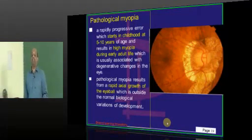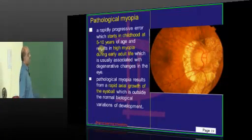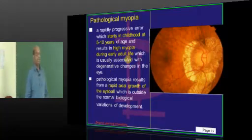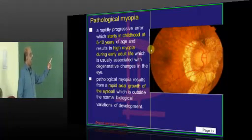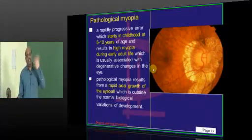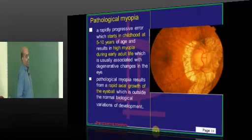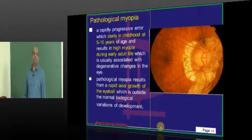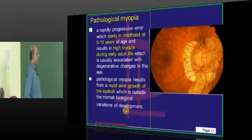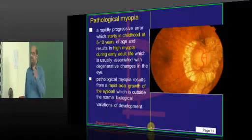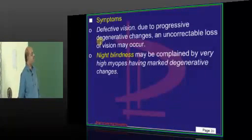Pathological myopia is rapidly progressive. It typically starts at the age of 5 to 10 years. By the time they are in early adult life or adolescence, they develop high myopia. It is often associated with degenerative changes in the eye. Why does pathological myopia develop? Any rapid axial growth of the eye — normally the eyeball size keeps increasing, but if it is very rapid, that leads to pathological myopia.